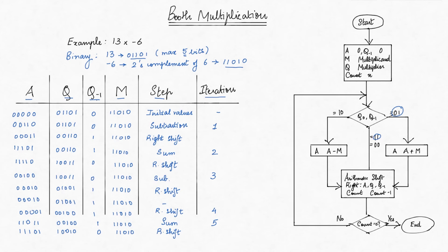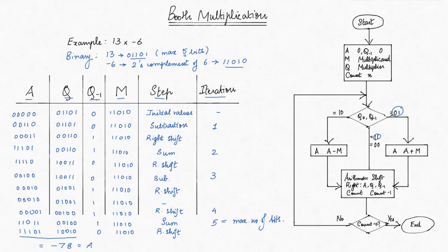We have now completed 5 iterations of the algorithm. We can stop now, as the number of iterations is equal to the maximum number of bits, which is 5 here. To get the result, we join registers A and Q together. This is the binary equivalent of decimal -78, which is our answer. That's how Booth's multiplication algorithm works for signed integers. Hope it helped you understand the concepts.